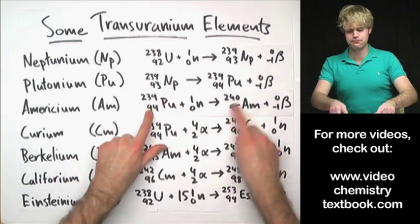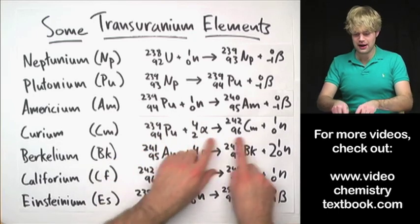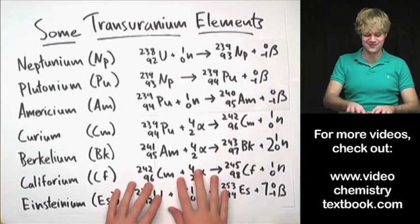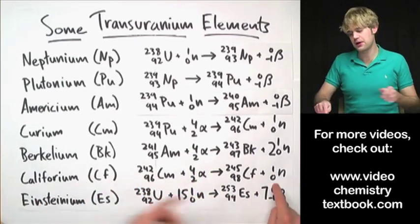Some of this stuff like Plutonium, after we've made Plutonium, we can bombard it with an alpha particle, and that makes Curium. We can take Curium and hit it with an alpha particle, and we get Californium, as well as a neutron getting kicked out.